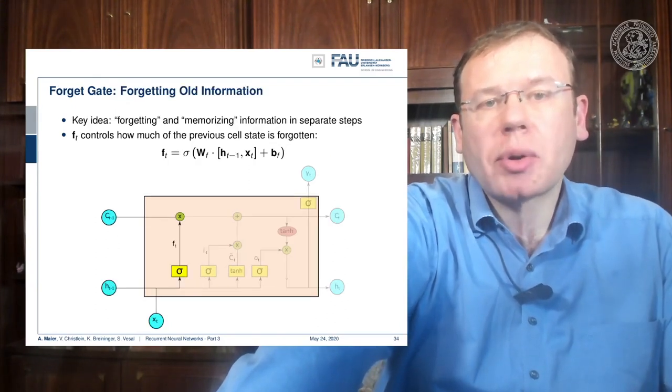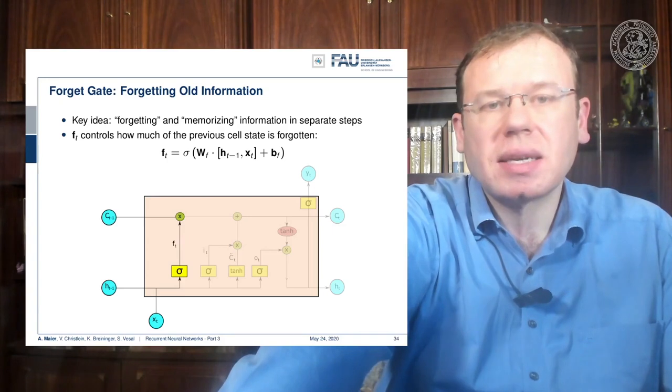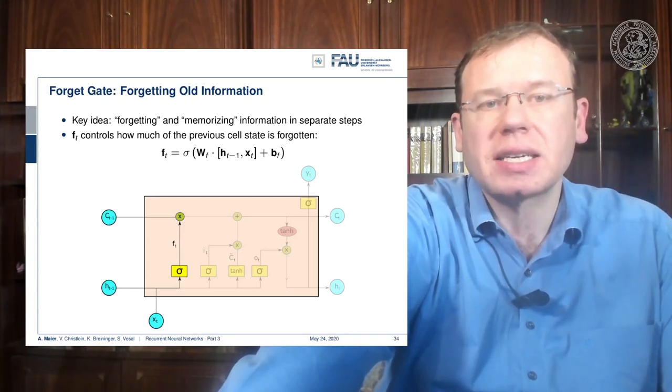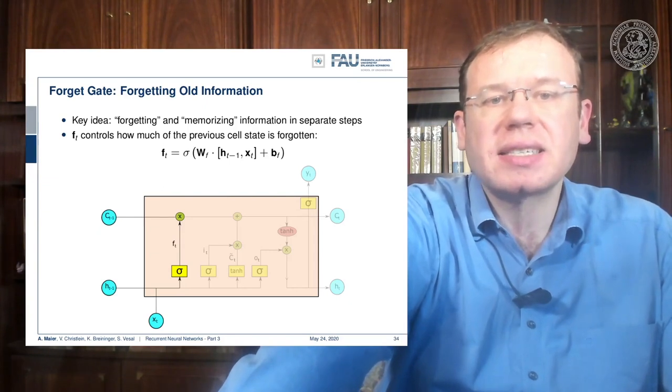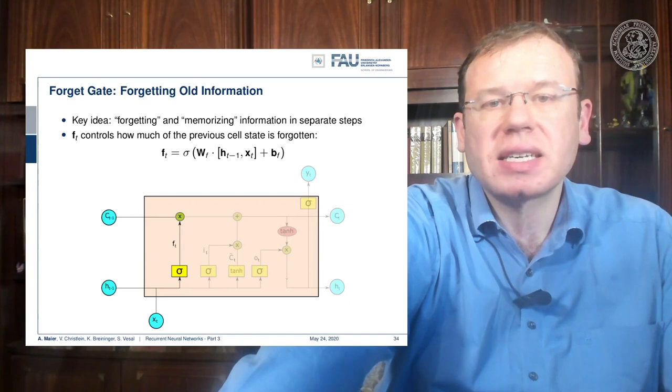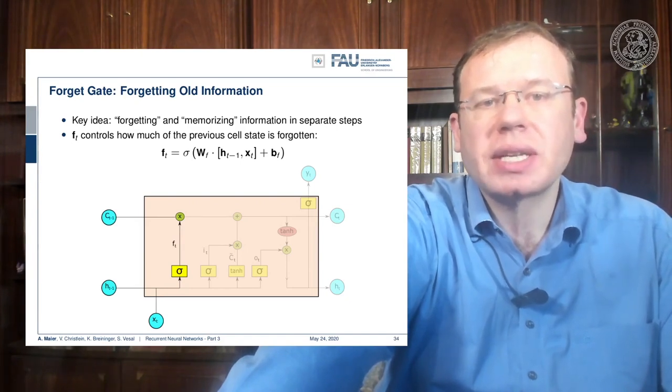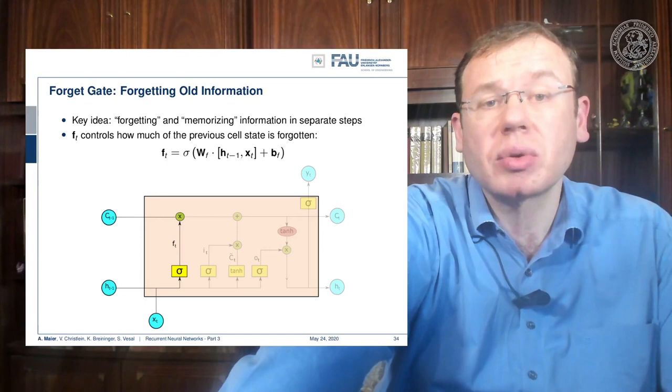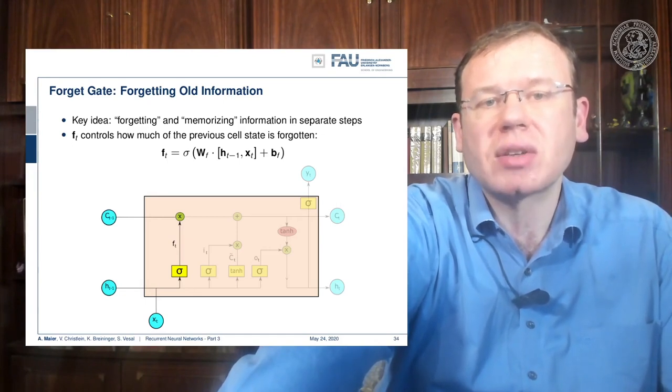Now we want to operate on the cell state and we do that with several gates. The first one is going to be the forget gate. The key idea here is that we want to forget information from the cell state, and in another step we want to think about how to actually put new information in the cell state, which is like memorizing things.